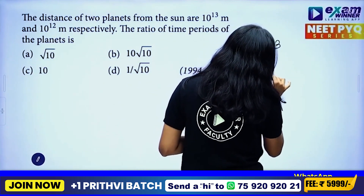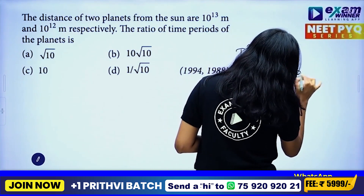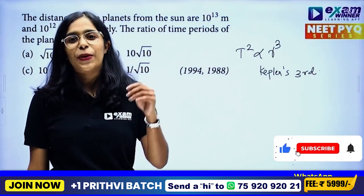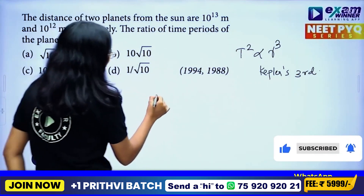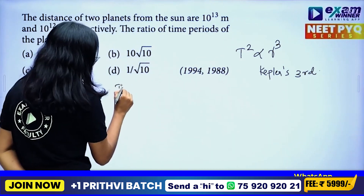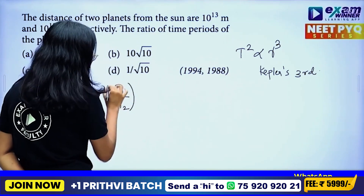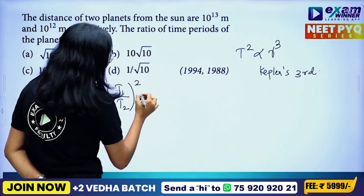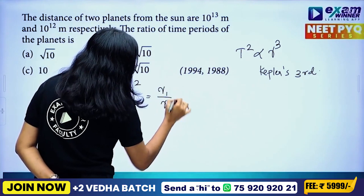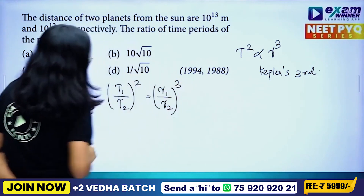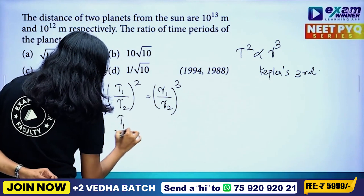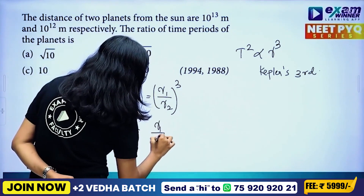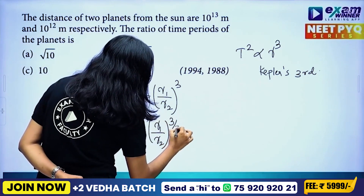This is Kepler's Third Law. We have T squared proportional to R cubed, so T1 by T2 whole square is equal to R1 by R2 whole cube. That is, T1 by T2 equals R1 by R2 raised to the power 3 by 2.